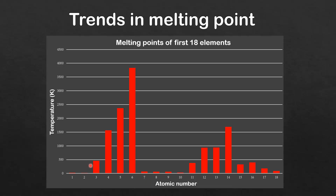We'll start by looking at the trend across Period 2, starting with lithium, then beryllium, then boron, then carbon, then nitrogen, oxygen, fluorine, and neon. As you can see, the melting point increases from lithium to carbon where it peaks, and then it decreases for nitrogen, oxygen, fluorine, and neon.